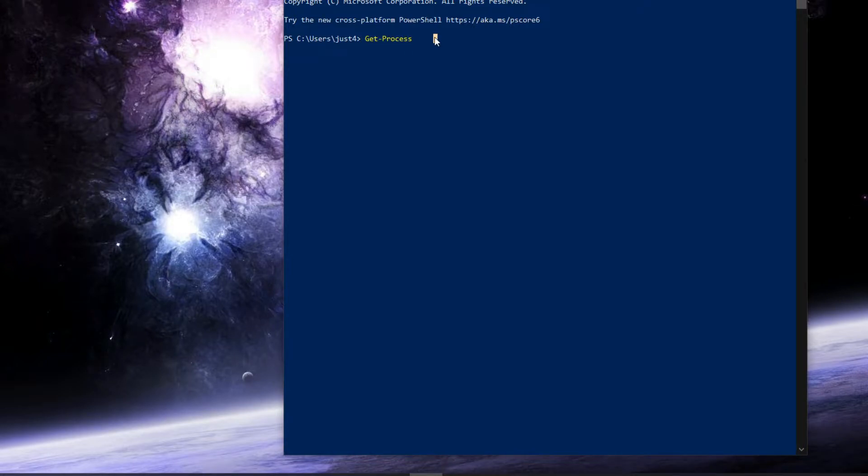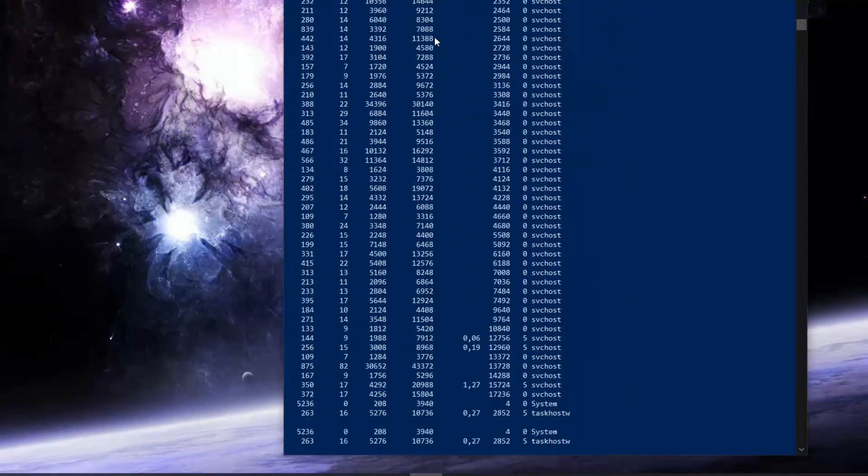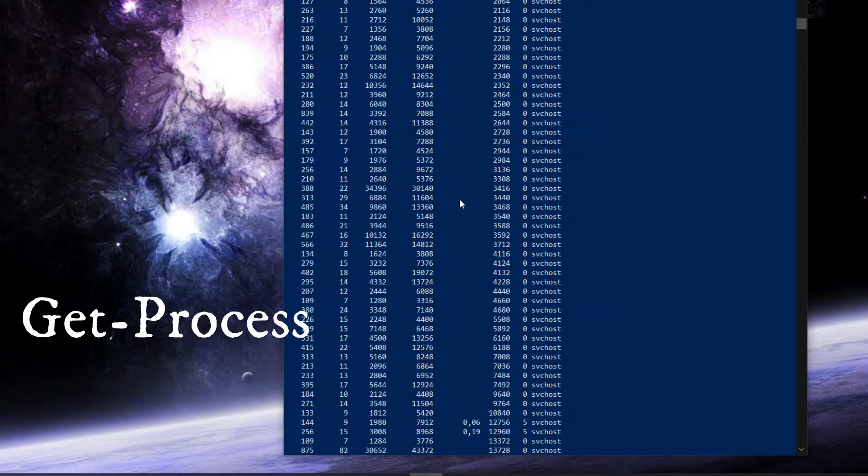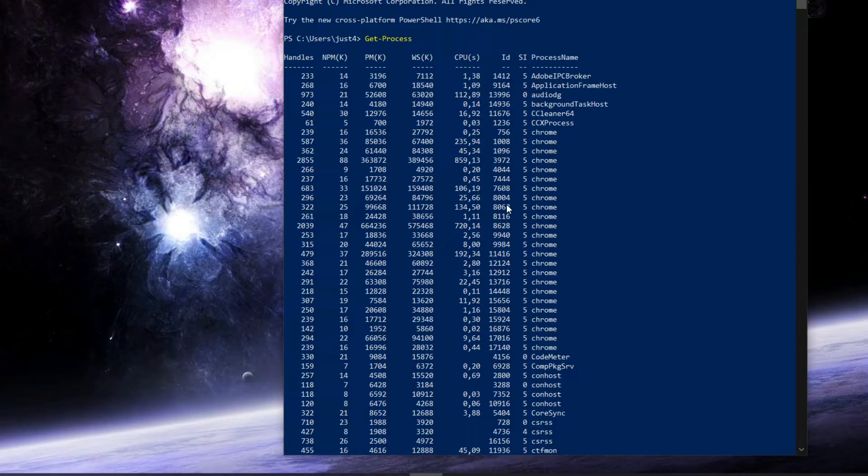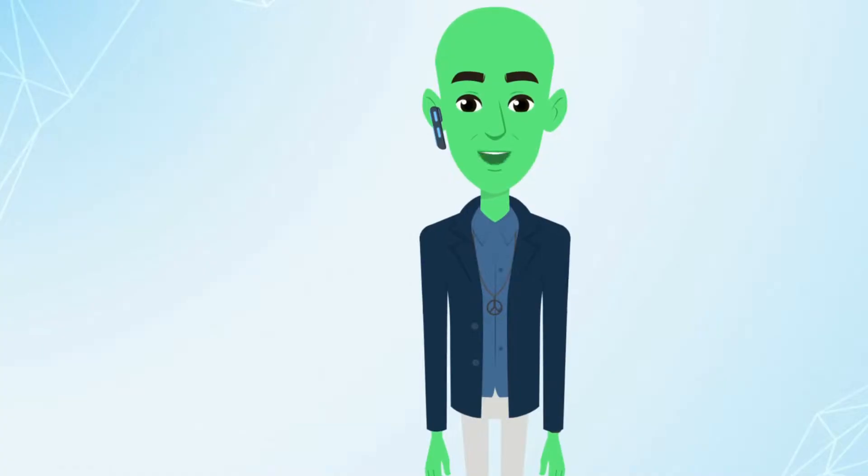let's take the command to output all processes on the Windows system on which you just called powershell.exe. The command is called Get-Process. With this command, you can see all processes currently running on your Windows system. Now you could, for example, terminate some processes, get more information about a specific process, or restart a process, and so on.